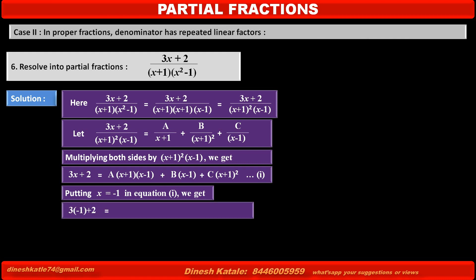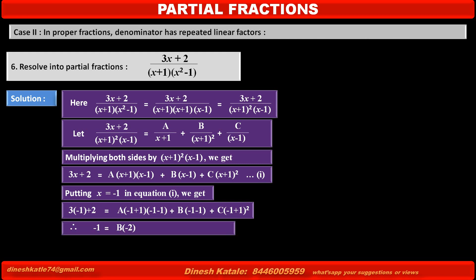We get: left hand side, 3(-1) + 2 equals A(-1 + 1)(-1 - 1) plus B(-1 - 1) plus C(-1 + 1)². Solving the above step, we get -1 = B(-2). Therefore, B = 1/2.